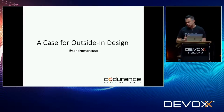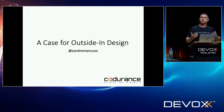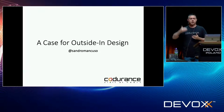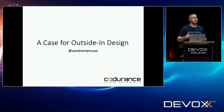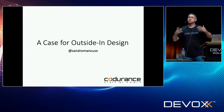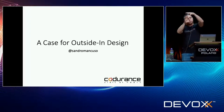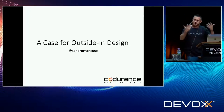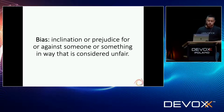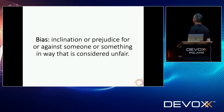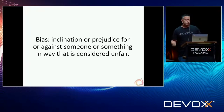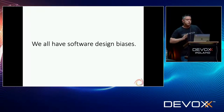Before I start, I want to mention this talk is not about a prescription. I selected some of the techniques that we use at different stages of a project, and I'm going to talk about those techniques, but they are not the only ones we use. We don't use all of them in every project. I also want to talk about bias — an inclination or prejudice for or against someone or something in a way that is considered unfair — because I think we all have software design biases.